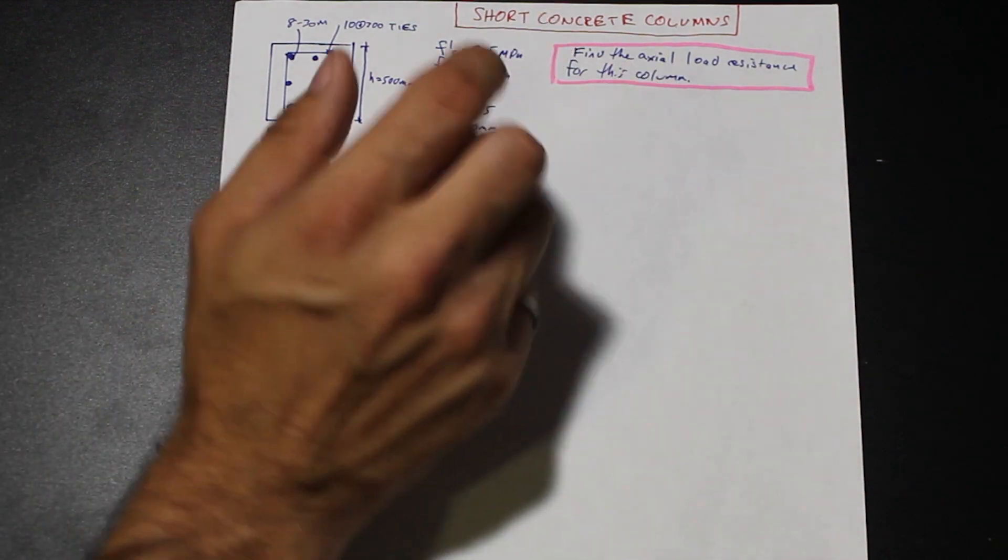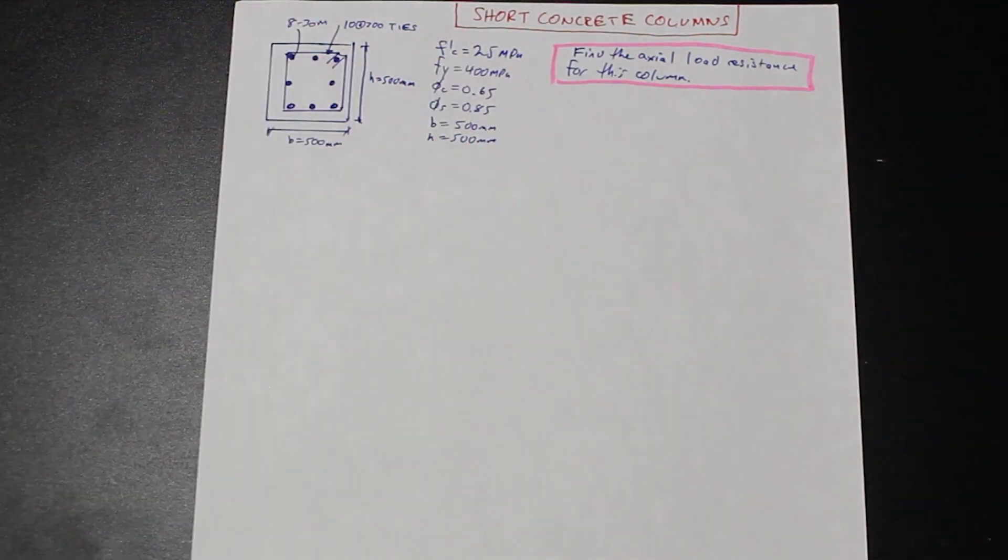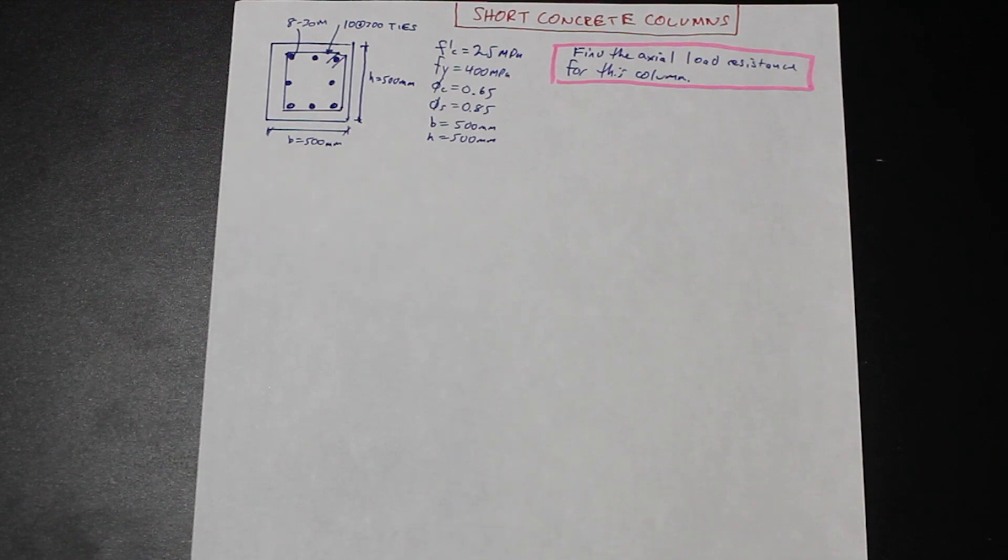How this video is going to pan out is we're going to do this example that we have on the page, which is pretty straightforward. We'll explain a little bit about how the code allows us to calculate axial resistances, the Canadian code.